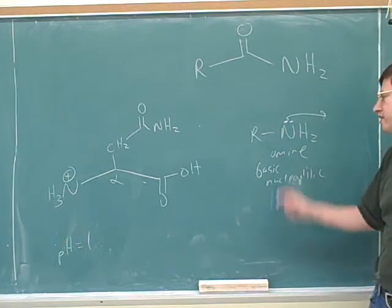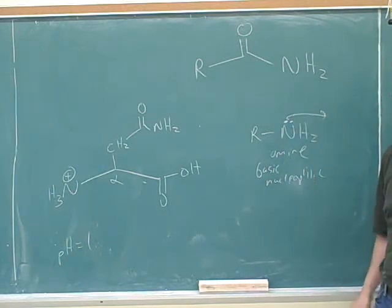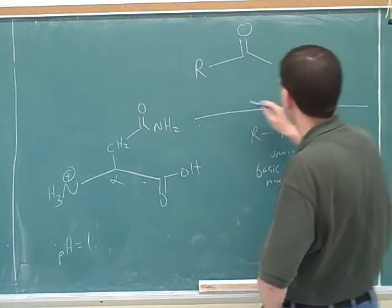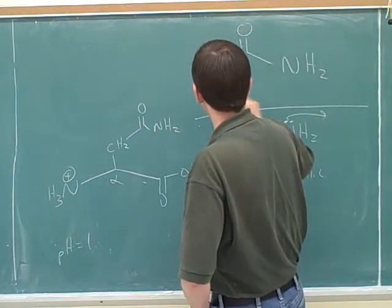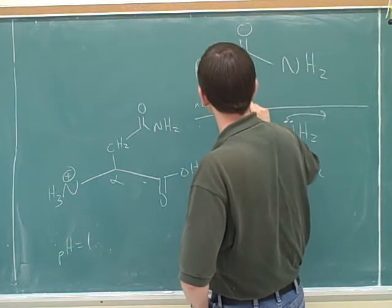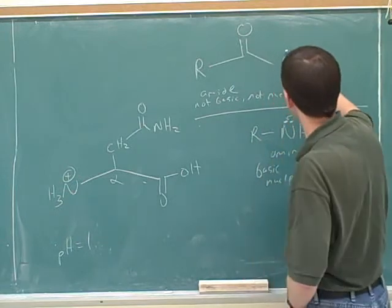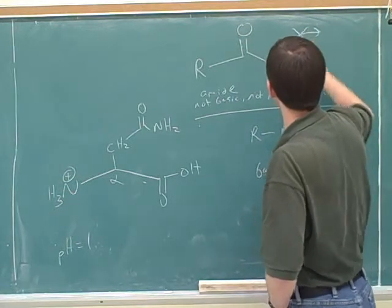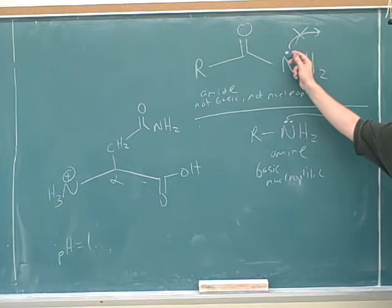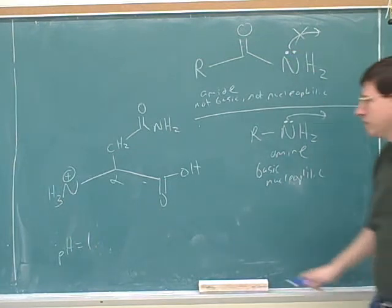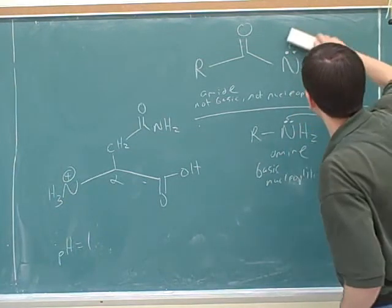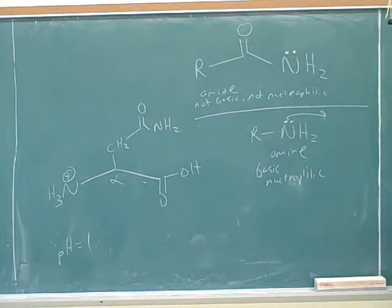Amines are basic and nucleophilic, which means they like to be at the tails of electron-pushing arrows. Amides are not basic and nucleophilic. Even though the nitrogen has a lone pair, we don't generally see this lone pair being donated. This nitrogen is not eager to donate its lone pair. We need to be able to explain why that is. And the explanation is based on resonance. Let's use electron-pushing arrows to draw the other resonance structure of this amide.